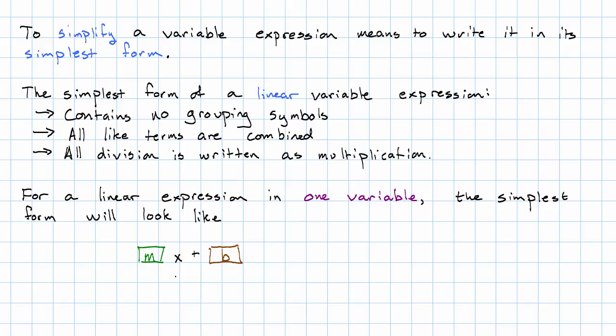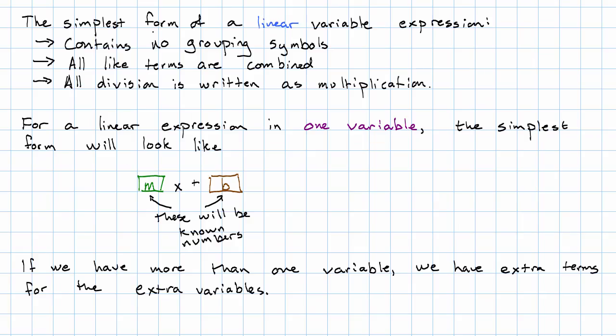But in the simplest form, these aren't going to be variables. These will be known numbers. Of course, if we have more than one variable, we'll have extra terms for the extra variable. And also be aware, order doesn't matter in addition or simplest form. So we could also write this as a number plus another number times the variable. There's no rule that says we have to write the variable term first.